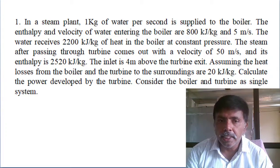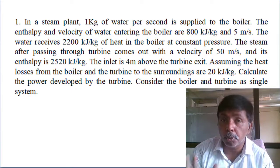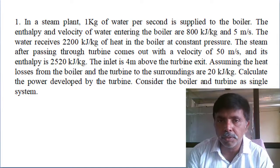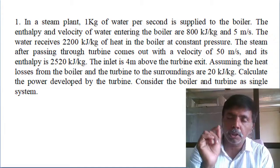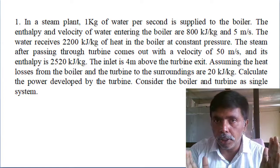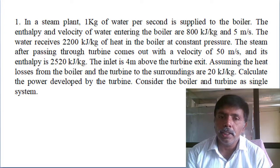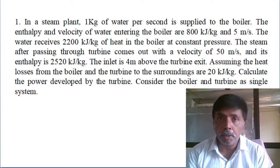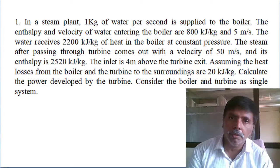The heat loss from the boiler and turbine combined is 20 kilo joules per kg, and the heat supply to the boiler is 2200 kilo joules per kg. We need to calculate the power developed by the turbine. One more assumption: consider the boiler and turbine as a single unit.